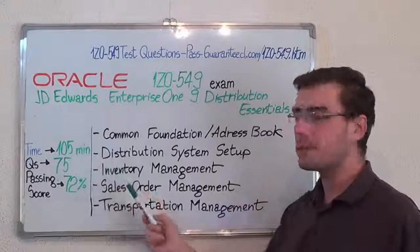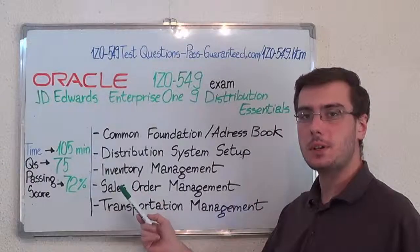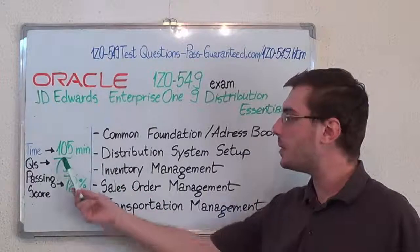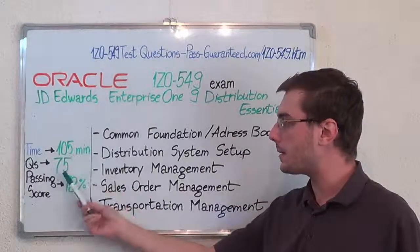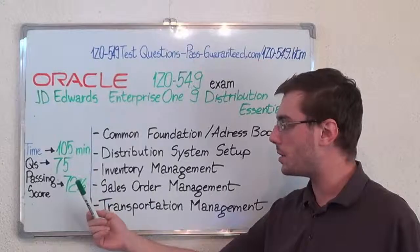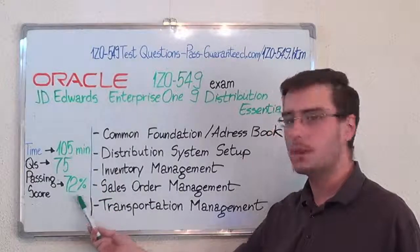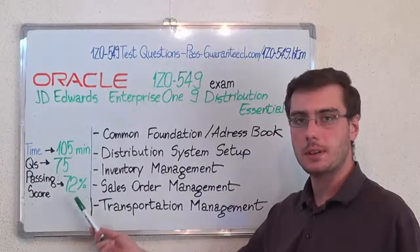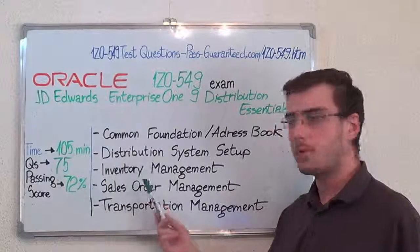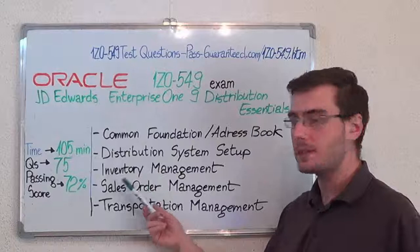Here you have some basic test information. The duration of this exam is 105 minutes, there are 75 questions and the minimum passing score is 72%. Now let's move on to the exam topics.